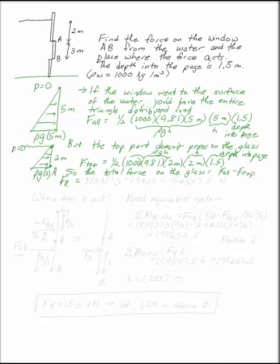So the total resultant force has to be 183937.5, which is what you get for f all, minus 29430, which is what you get for f top. That's 154507.5 newtons. That's the resultant force. What I've done is I've considered this whole triangle minus this top part, which doesn't press on the glass.